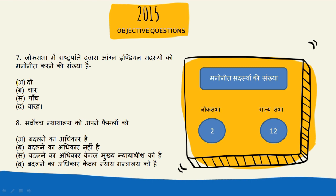Next question: Lok Sabha mein Rashtrapati dwara Anglo-Indian sadasyon ko mononeet karne ki sankhya hai, to iska answer hai do. Yaani Rashtrapati Lok Sabha mein do sadasyon ko nominate ya mononeet kar sakte hain. Jabki Rajya Sabha mein Rashtrapati jo hai wo barah sadasyon ko nominate kar sakte hain. Arthat Rashtrapati ke dwara kul 14 sadasyon ko nominate kiya ja sakta hai.